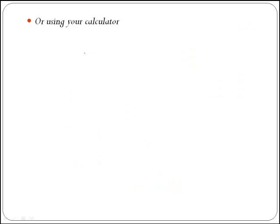The second option to find the argument, if you don't want to use the log tables, would be to use your calculator. Remember, we wanted to solve tan of theta is equal to the square root of 3, which was a trigonometric equation because theta is inside a trigonometric ratio.